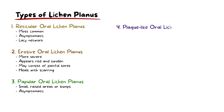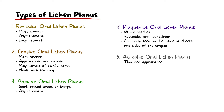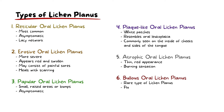Papular oral lichen planus appears as small raised areas or bumps that may or may not cause symptoms. The plaque-like OLP appears as white patches that resemble leukoplakia, often found on the inside of the cheeks and the sides of the tongue. The atrophic type is characterized by areas that appear thin and red and is often accompanied by a burning sensation. Bullous lichen planus is a very rare form that presents with fluid-filled blisters that may rupture, leading to painful ulcers.